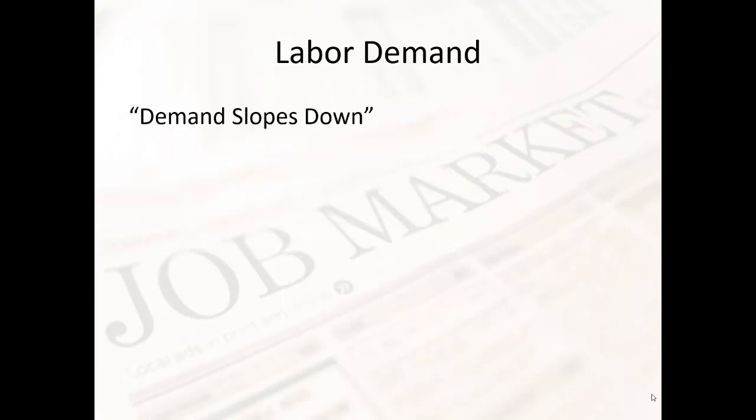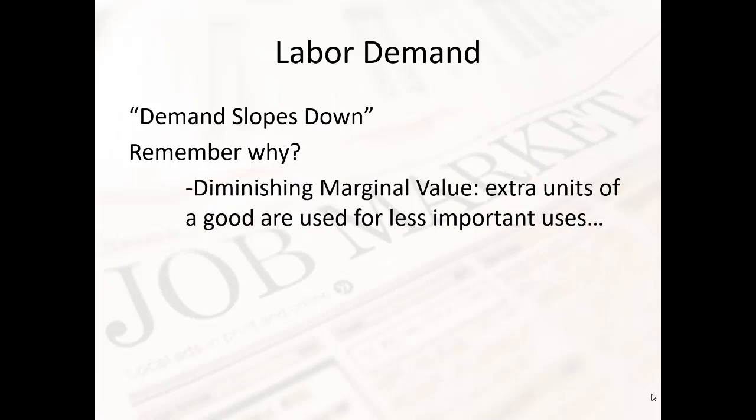Let's look at labor demand. Remember the first law of demand: demand slopes down. People buy more when the price goes down, they buy less when the price goes up. The people doing the buying here would be companies, businesses hiring workers. Labor demanders are businesses, and labor suppliers are people looking for jobs. Why does demand slope down? There's diminishing marginal value — extra units of a good are used for less important uses. Extra workers would obviously be used for less important tasks than the first workers hired, otherwise those tasks would have been performed by the first workers hired.